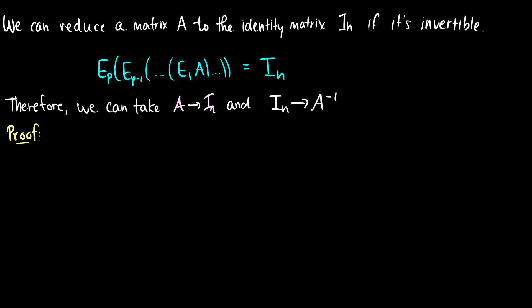So these operations will be exactly the same. Here's the proof of it — this is an if-and-only-if statement, so we need to show both ways. We need to show that A can go to I_n, and then that I_n can go to A inverse. We're going to suppose that A is invertible, because we need A to be invertible for this to work. If it's not invertible, then clearly it won't have an inverse. We have that Ax = B has a solution for every B, and this was one of our theorems from earlier.